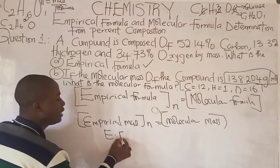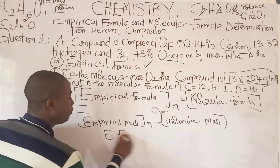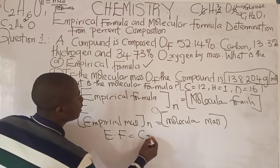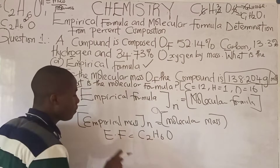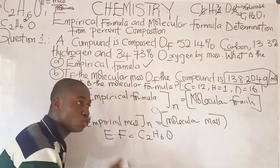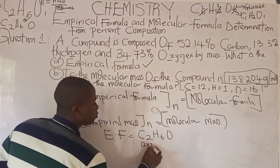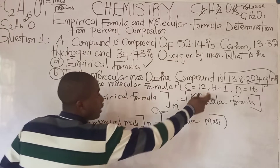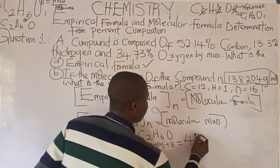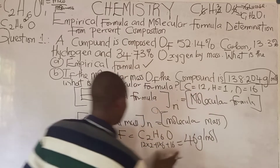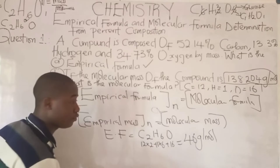What we do now is calculate the empirical mass from the empirical formula C2H6O. Carbon: 12 times 2 atoms; plus hydrogen: 1 times 6 atoms; plus oxygen: 16. When we calculate, we get 46 grams per mole. This is our empirical mass, and the molecular mass is already given as 138.204 grams per mole.